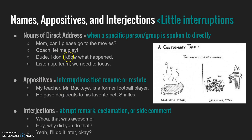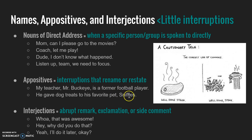Appositives are kind of like nouns of direct address and they can actually overlap. For example: My teacher, Mr. Buckeye, is a former football player. Here, Mr. Buckeye is the appositive because I'm restating or renaming who my teacher is — I'm clarifying or adding on to that person's identity. When renaming like that, it's called an appositive, and you do put commas with it. Appositives can appear in the middle of a sentence or at the end, like: He gave dog treats to his favorite pet, Sniffles.